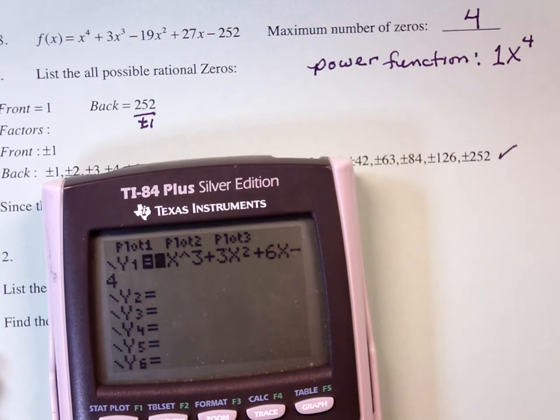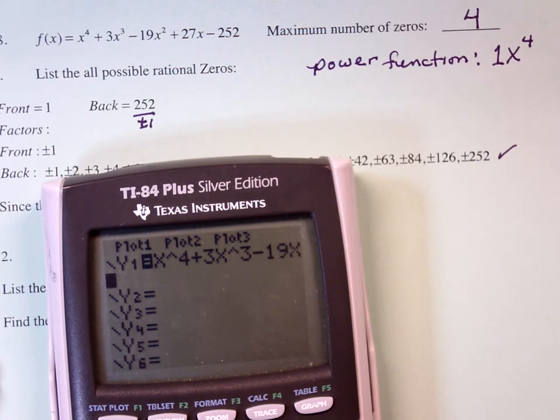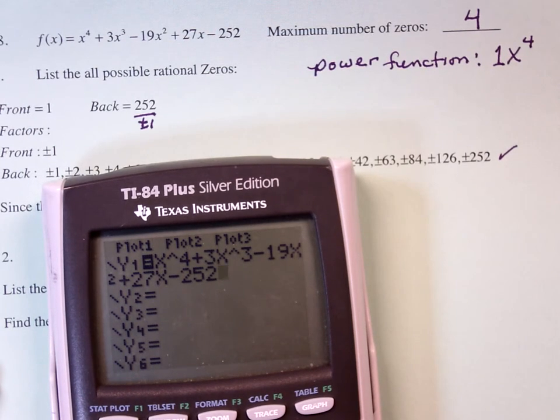So, y equals, and clear that out of there, x to the fourth plus 3x to the 3 minus 19x squared plus 27x, minus 252. And check to see that I've typed it in correctly.